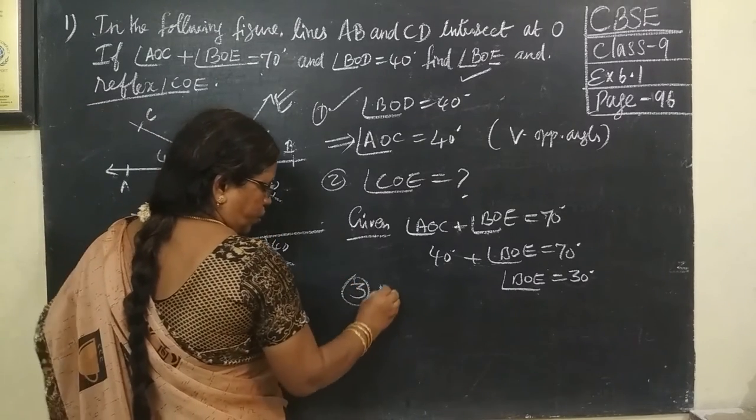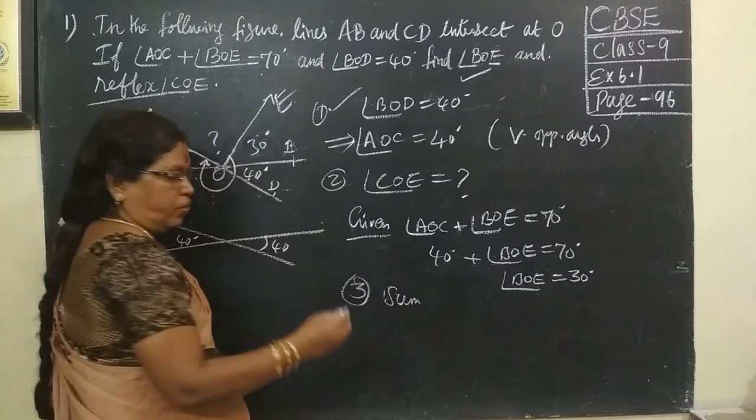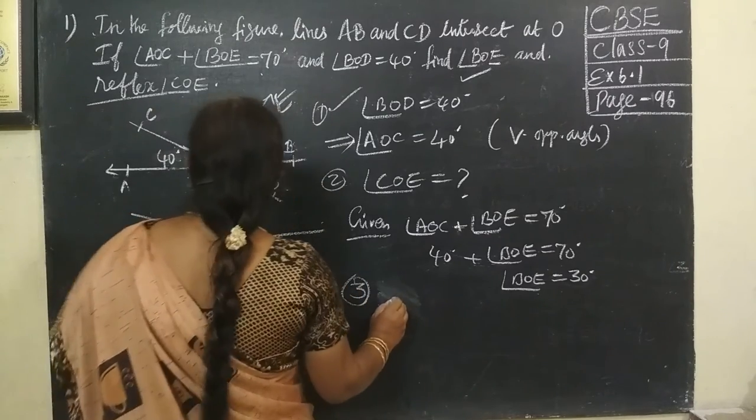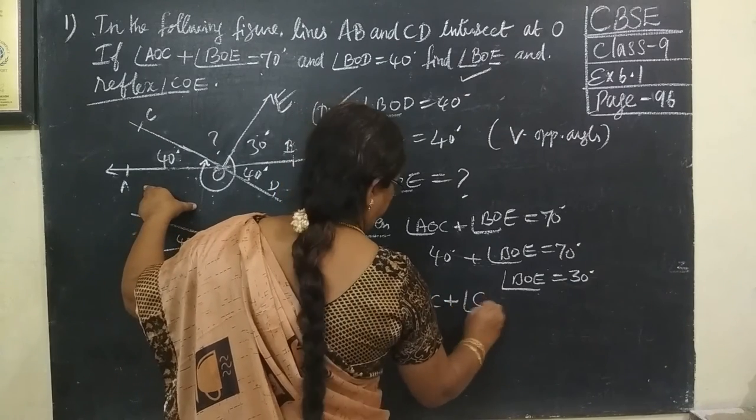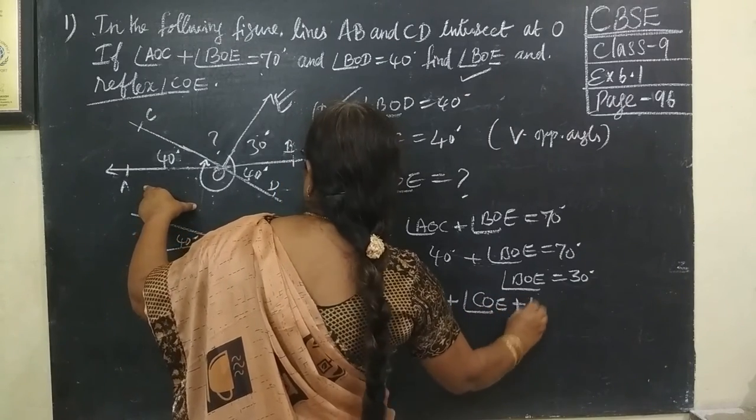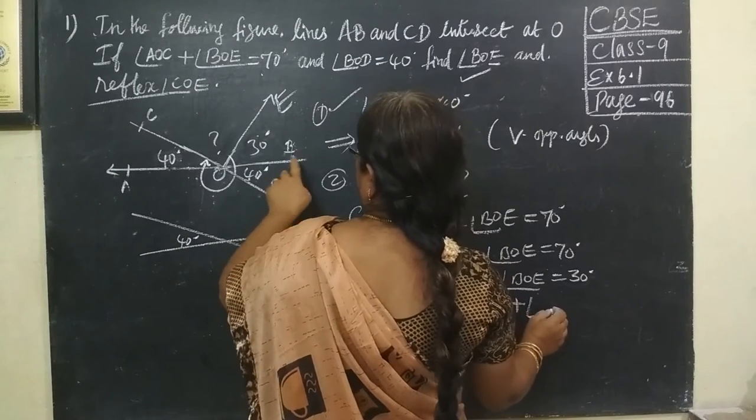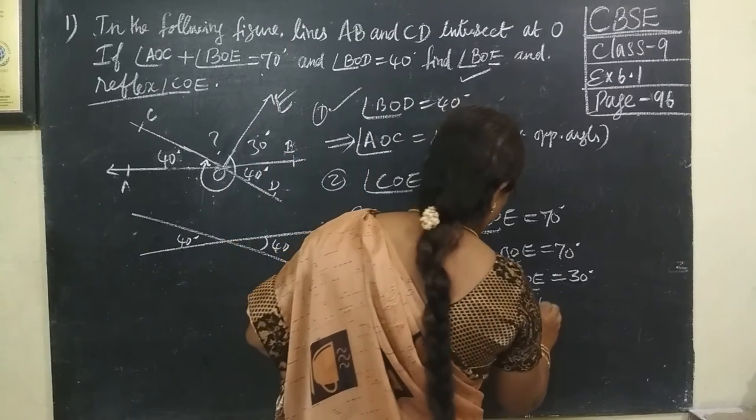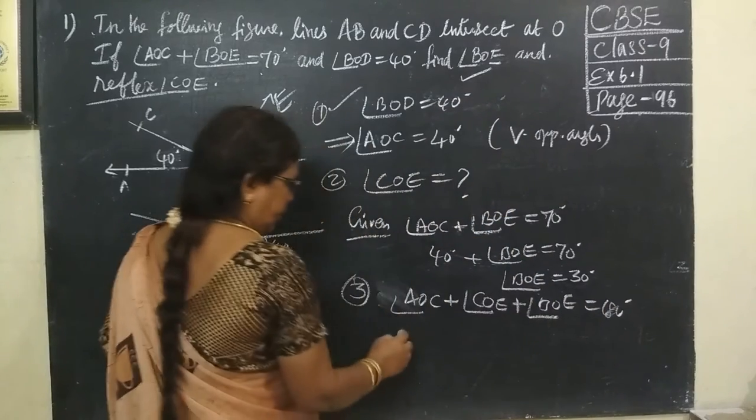So, on third point, we know sum of the angles in a straight line equal to 180 degrees. So, now you add AOC then COE then next one equal to AOE equal to 180 degrees.